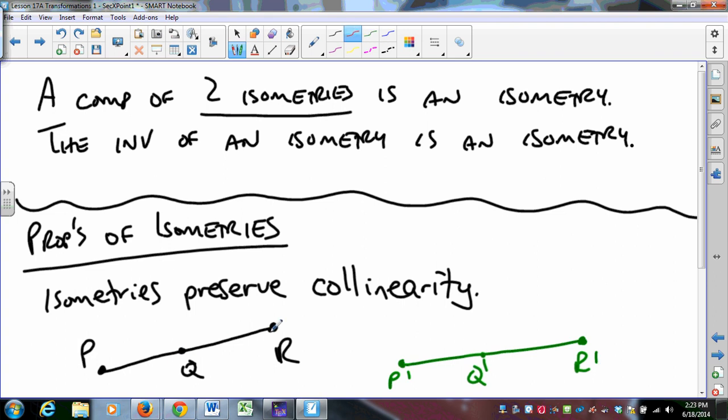If P, Q, and R are collinear, one is between the other two. Let's pretend that this one is between the other two. Then I know that PQ plus QR is PR. That's a neutral result. If Q is between P and R, PQ plus QR is PR. So what do I know about isometries? I know they preserve distance. So the distance between P and Q is the same as the distance between P' and Q'. And the distance between Q and R is the same as the distance between Q' and R'. And the distance between P and R is the same as the distance between P' and R'.